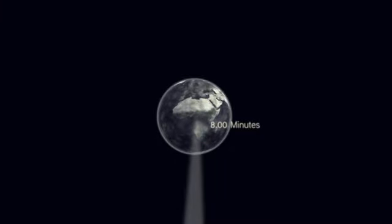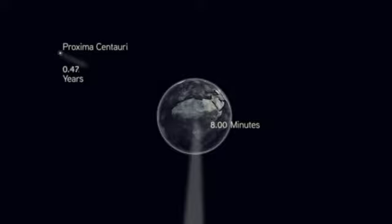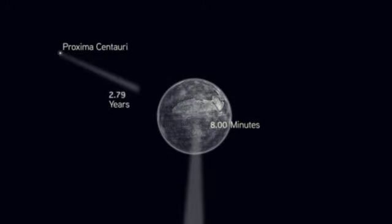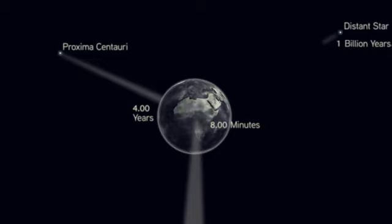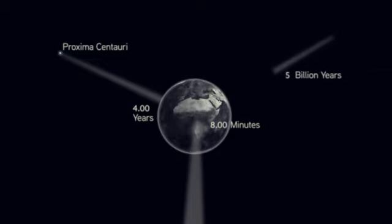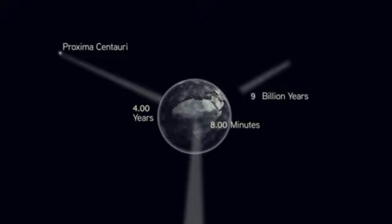The next closest star to Earth is Proxima Centauri. Its light takes more than four years to reach us, and some of the most distant light we can see with a telescope comes from galaxies that lived and died before our planet Earth even existed.